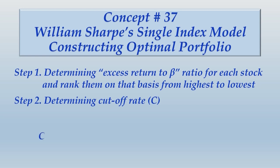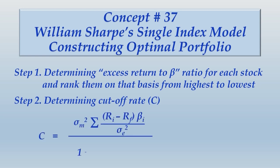Step 2 is determining a cutoff rate. This cutoff rate is computed through a formula. As mentioned before, the formula may initially look complicated, but it is not - it is very simple. Once you understand its application, you will be comfortable with it. These steps and formulas are printed in your textbook, so you do not need to write them; just understand how to apply these steps. Moving ahead to Step 3.